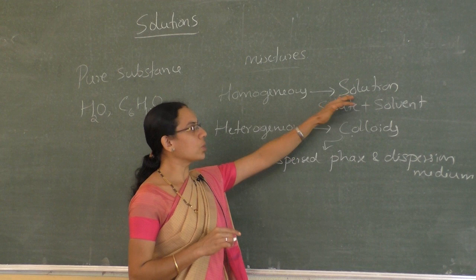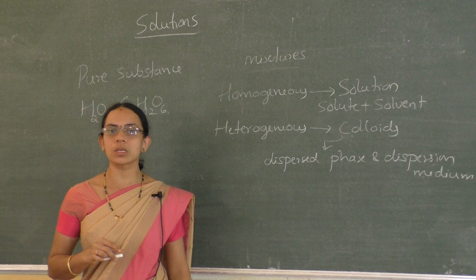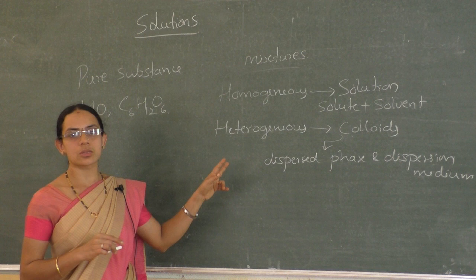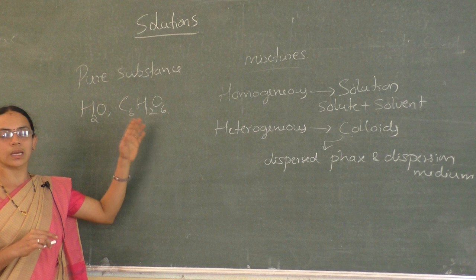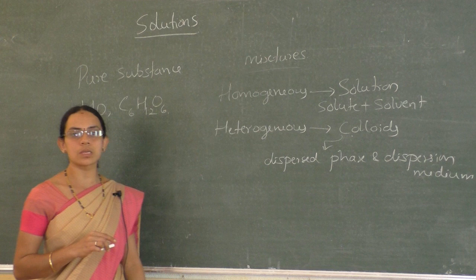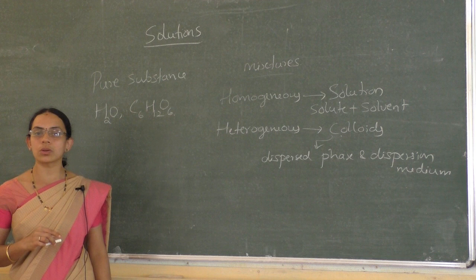A solution is a homogeneous mixture of two or more components. If you have two components, it is called a binary mixture. In this chapter, we are going to study about binary mixtures. In our daily life, we rarely come across pure substances — most of the substances we use are mixtures, and the importance of a mixture depends on its composition.